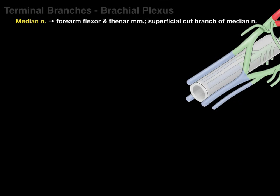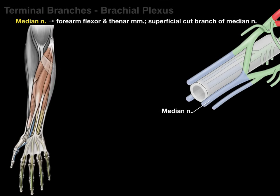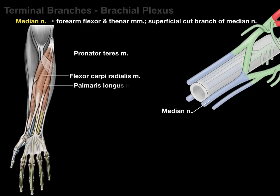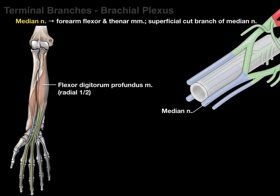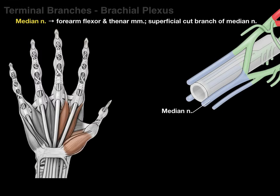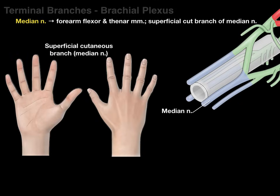Next is the median nerve, innervating the forearm flexors and thenar muscles with a superficial cutaneous branch. It innervates forearm flexors like pronator teres, flexor carpi radialis, and palmaris longus, as well as flexor digitorum superficialis, the radial half of flexor digitorum profundus, and flexor pollicis longus. It also innervates the thenar muscles — intrinsic muscles of the thumb — and the first and second lumbrical muscles. The superficial cutaneous branches cover the palmar surface of the thumb, index, middle finger, and radial half of the ring finger, plus the dorsum of the thumb, index, middle finger, and part of the ring finger.